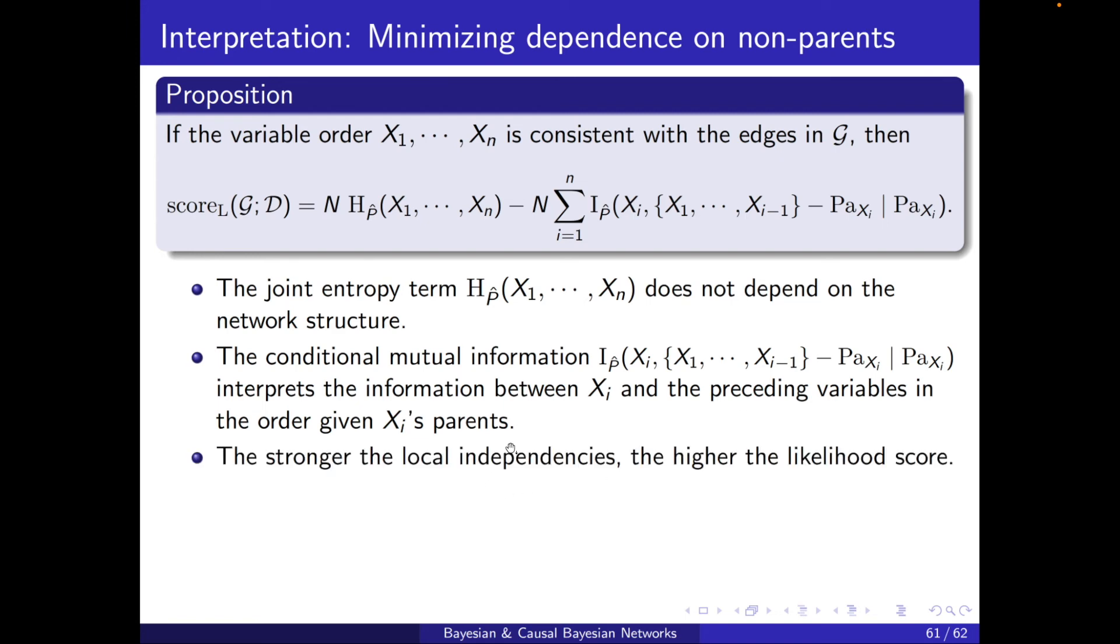So it's kind of capturing the dependence with the non-parental nodes. The more independent Xi to its non-parental preceding nodes, the higher the score of the network. And this means that if we condition Xi on its parents, then ideally we would like it to be completely independent of all the preceding nodes. And this is suggesting that, well, we should just make all of Xi minus 1 as the parents of Xi, because then there's nothing to be independent from. And this is a condition that will be surely satisfied in any data set.